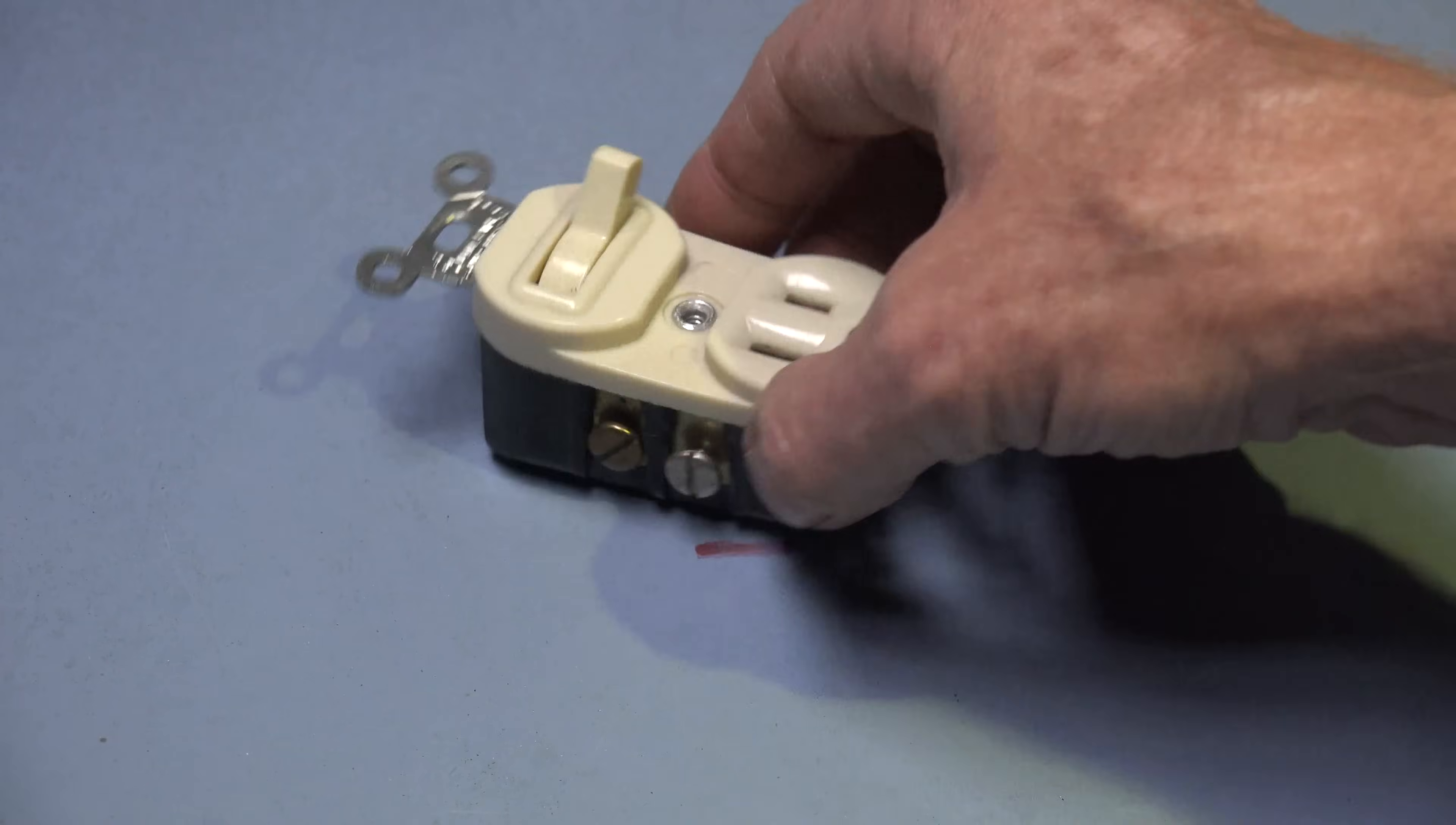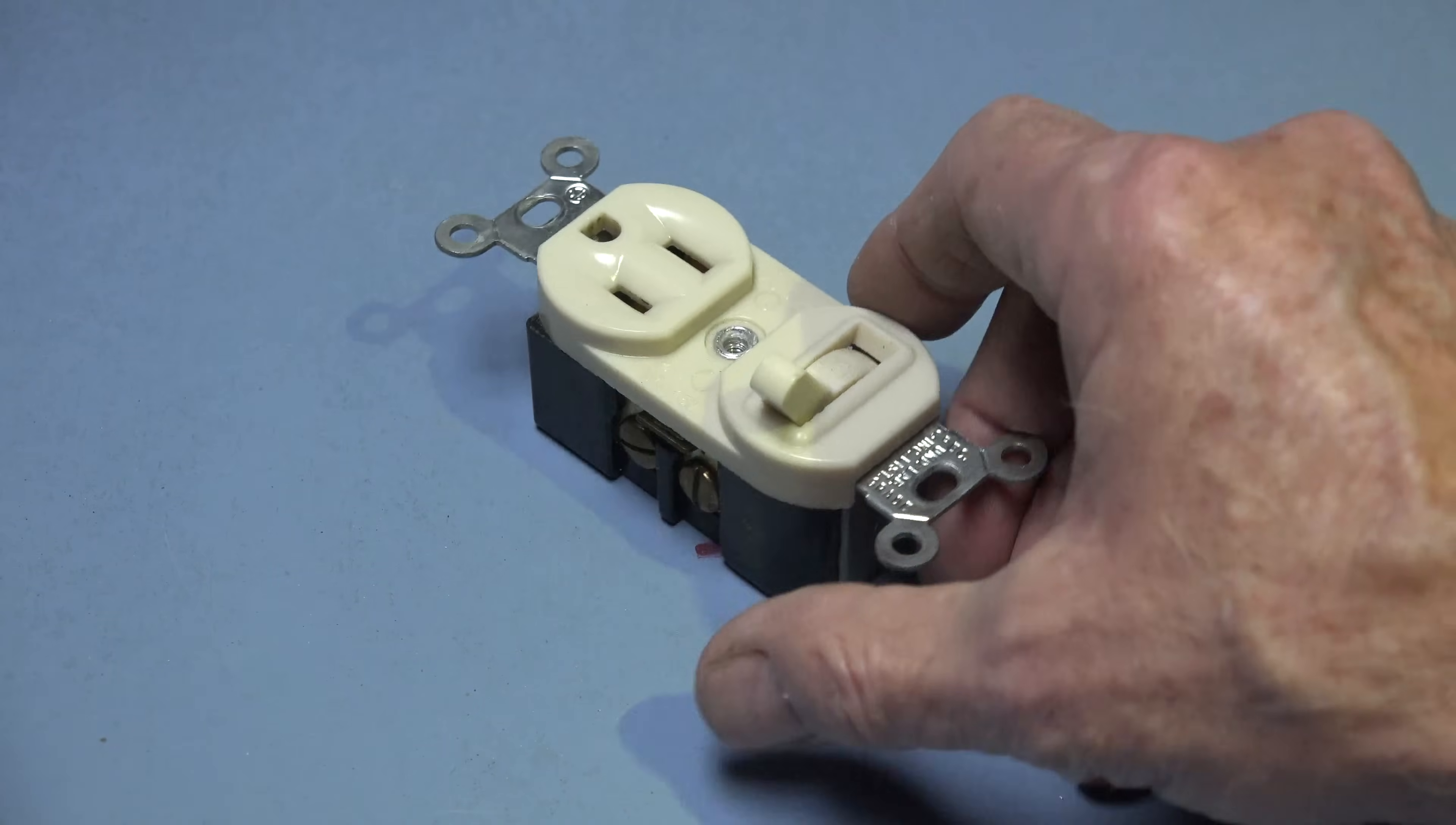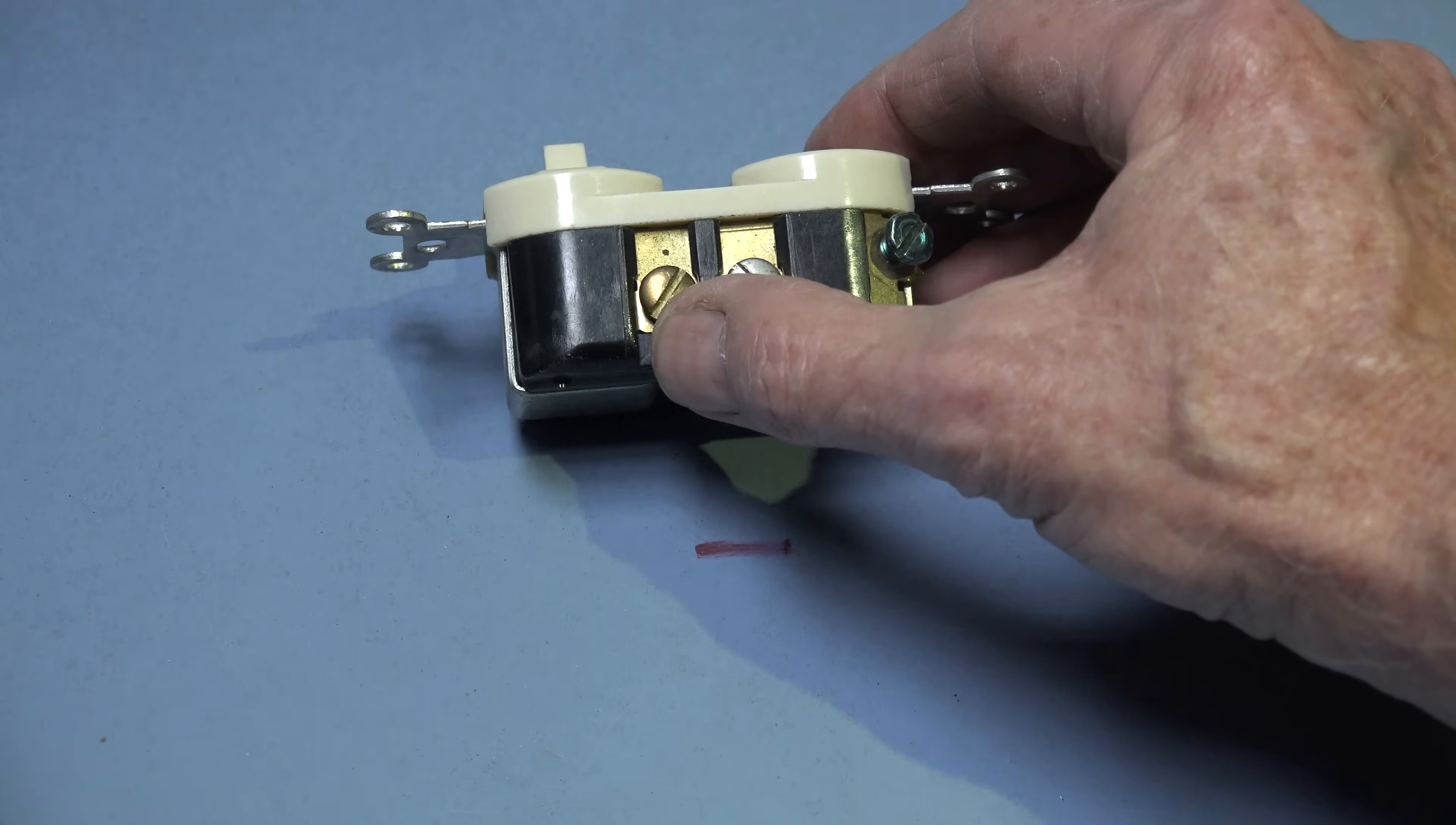If I wanted this switch to control just the appliance and leave the outlet alone, the hot lead could go to either one of these, doesn't make any difference. That's a hot lead from power. The neutral is going to go here, neutral always goes there. Of course ground here.